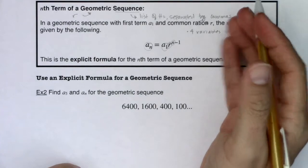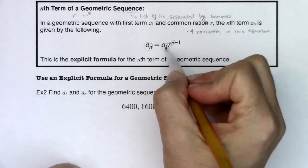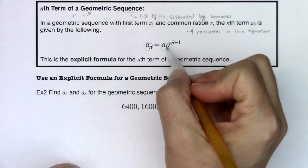Much like the arithmetic sequence formulas, typically you'll be given three of these variables and be asked to solve for the fourth one. The most important two are a sub 1 and R.